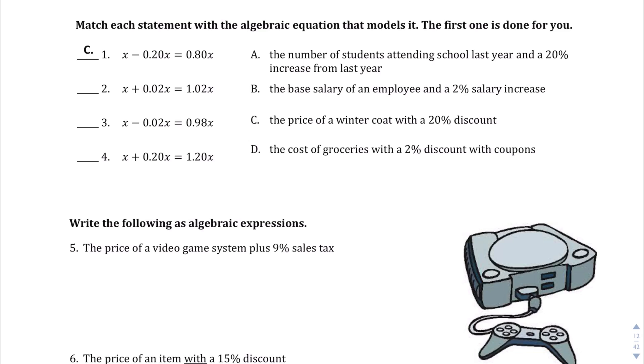Okay, here we're asked to match each statement with the algebraic equation that models it. And we are told that the first one is done for us. The first one is done for us. X minus 0.20X equals 0.80X, and that is the price of a winter coat with a 20% discount. And what I'd like you to notice is that it matches with C because we are told in C we have a 20% discount. We're paying less money with a discount, so that's why it's minus 0.20X.